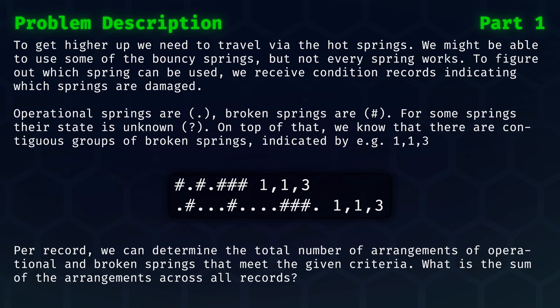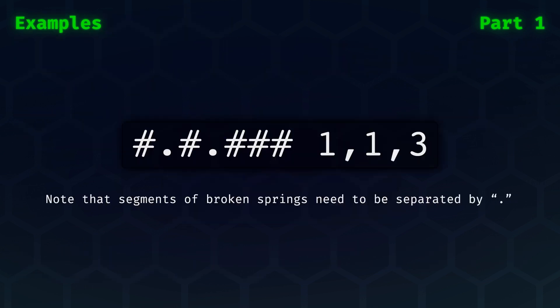For starters, here is a complete example with no unknowns. This means that it is a single possible arrangement. This arrangement shows one broken spring on the left, one broken spring in the center, and a group of three broken springs on the right most edge.